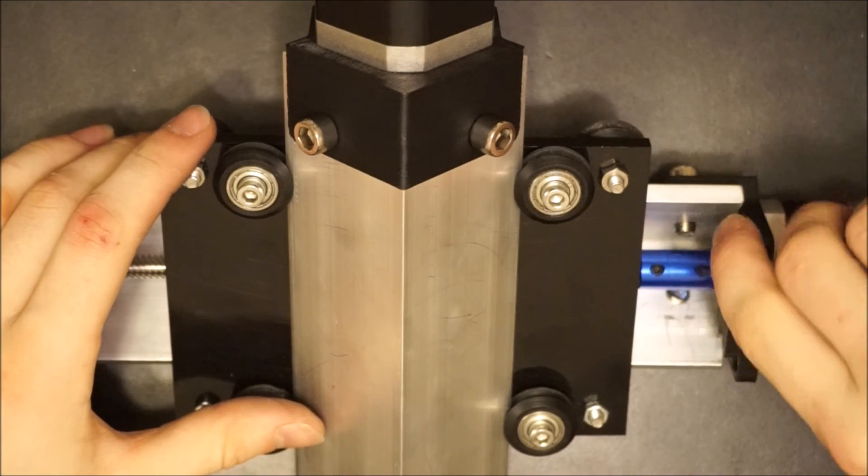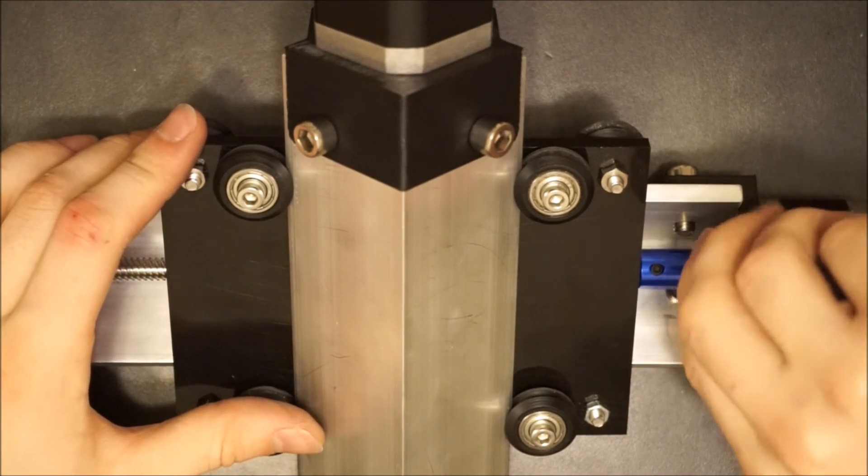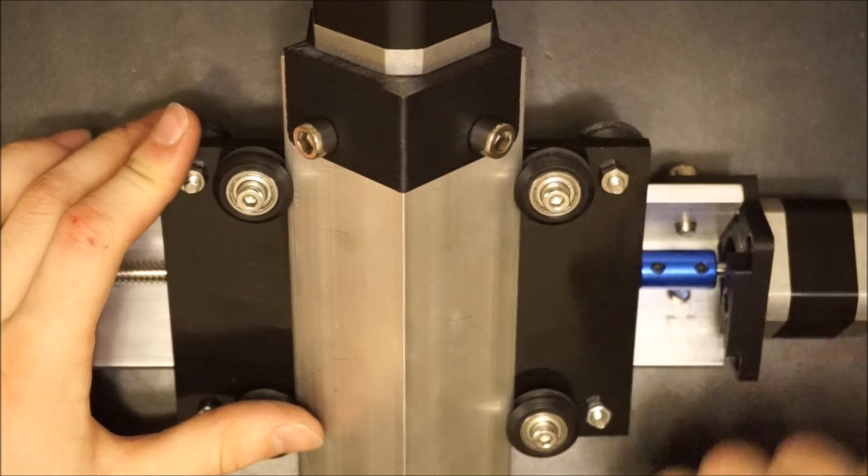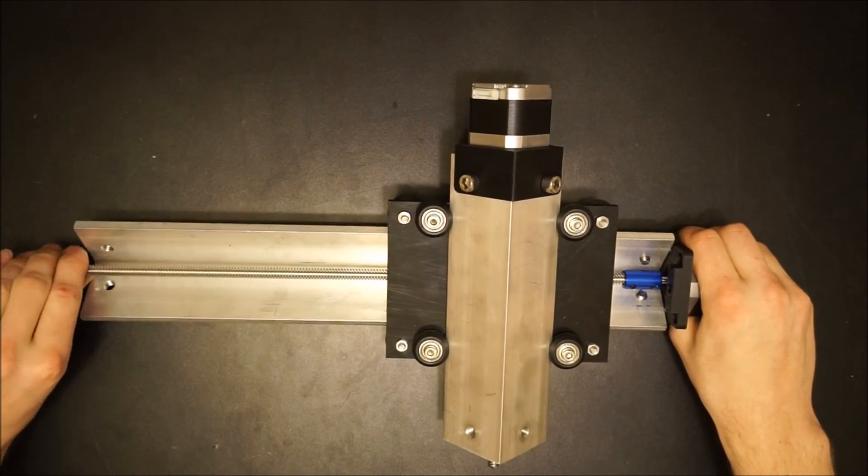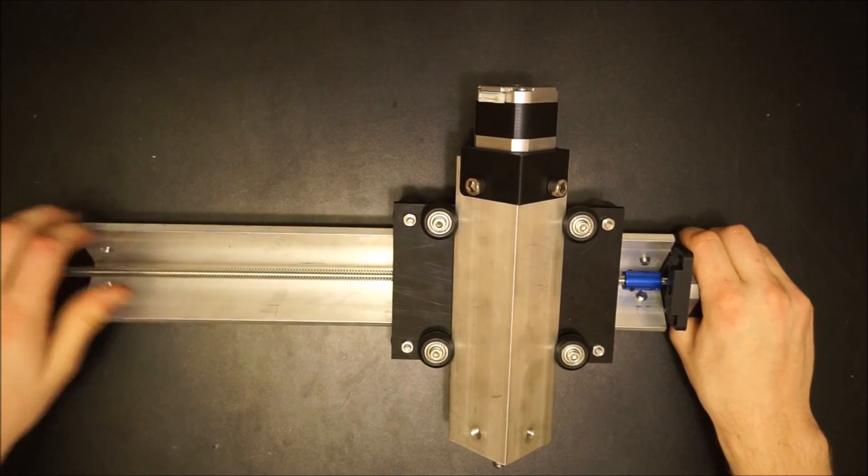Also, if you notice that it's difficult to turn the lead screws by hand after installation, try loosening the bolts of the lead screw nut mount a little. Then turn the lead screw a few rotations and re-tighten the bolts.